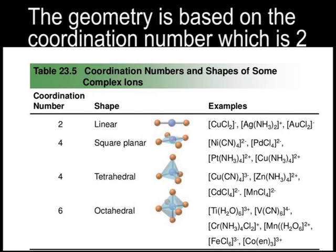So if you've got a coordination number of 2, it's linear. If it's 4, it can be square planar or tetrahedral. And 6, it's octahedral. So now you can see, with our coordination number of 2 for this copper complex, the shape is linear.